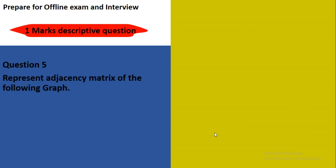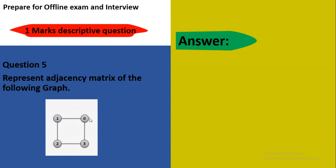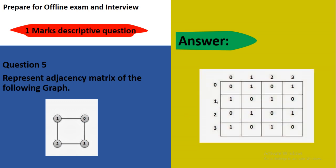Next question: Represent the adjacency matrix of the following graph. The graph is given here: 1 to 0, 0 to 3, 3 to 2, 2 to 1. This is an undirected graph because direction is not specified. How many vertices? Four: 1, 2, 3, 4. Write the name of the vertices here in columns and in rows also. 1, 2, 0. Take row 1 to 0 and represent 1 here because the edge presents between 1 to 0. So mark 1 here. Then 1 to 2, represent 1 here again.